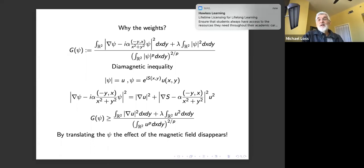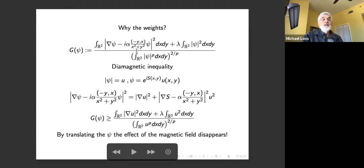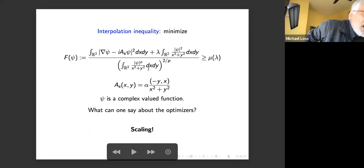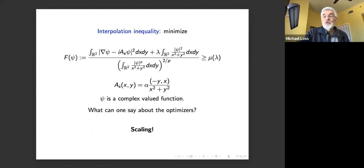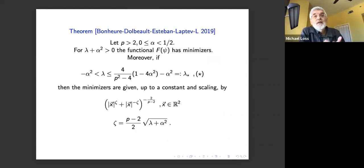So by dropping the magnetic term we get a lower bound, but this lower bound is sharp: you can move ψ to infinity, and since the term decays you don't see it. In other words, without weights this problem has no optimizer. That is the reason we add the weights — to preclude the idea of pushing ψ to infinity to decrease the energy.